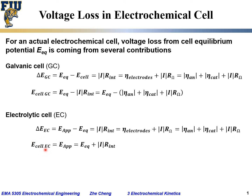Similarly, the electrolytic cell applied voltage equals the equilibrium cell potential plus the current times the total internal resistance. That current times total internal resistance expands into three terms, giving us the overall electrolytic cell potential — the applied voltage you must supply to drive a certain electrolytic current I.